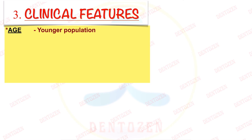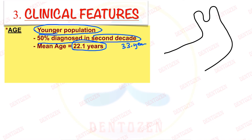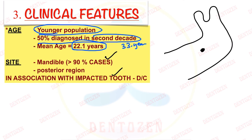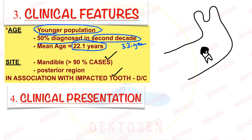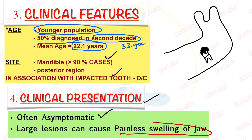Now let's look at the clinical features. This Ameloblastoma occurs in a younger population compared to the solid type. 50% of cases are diagnosed in the second decade, and the mean age is 22.1 years, compared to solid Ameloblastoma for which the mean age is 33 years. The most common site is the mandible, specifically the posterior mandible — more than 90% of cases occur there. It is also seen in association with an impacted tooth, so it resembles a dentigerous cyst clinically. The clinical presentation is usually asymptomatic, but large lesions can cause painless swelling of the jaws.